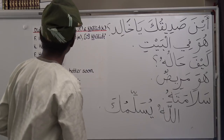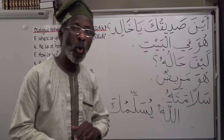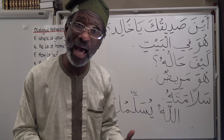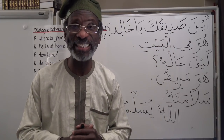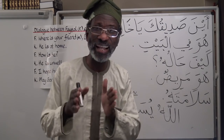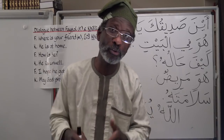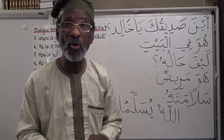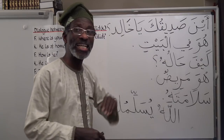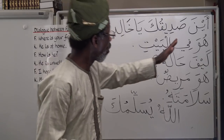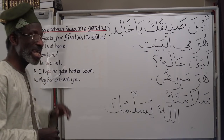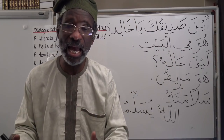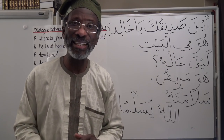'Aina sadiquka, ya Khalid?' — where is your friend, oh Khalid? Aina means where, sadiq means male friend (singular), and 'ka' is the attached pronoun identifying the male person we're speaking to. 'Huwa fi al-bayt' — he is at home. Huwa means 'he is'; fi means in or at; bayt means house.